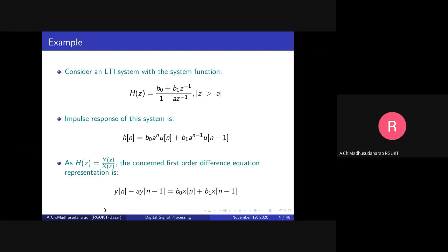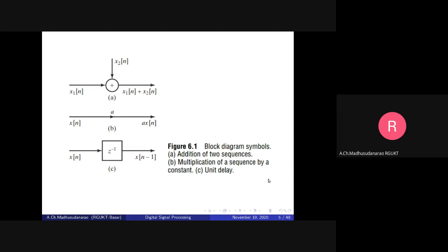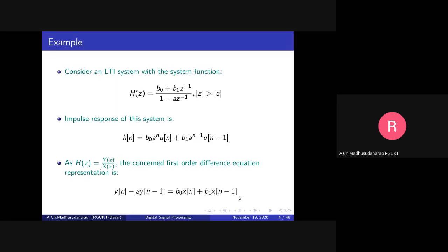This gives a recursive equation: y(n) as a function of the present input, past inputs, and past outputs — a recursive expression to compute the output y(n). To implement this difference equation we require multiplication by constants such as b0 and b1, addition operations, and delay operations for terms like x(n-1). In order to implement a difference equation or a system function, we require three things: a delay component, multiplication by a constant, and an addition operation.